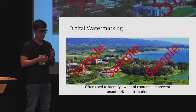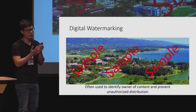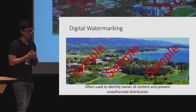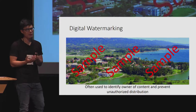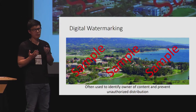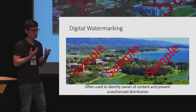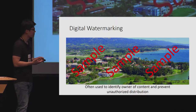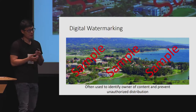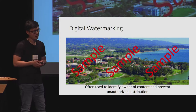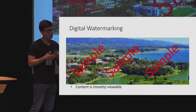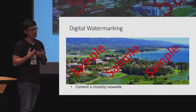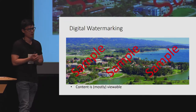So if you look at this photo and really like it, you can pay the photographer and they can provide you with the original image that is not watermarked. For these types of scenarios, a watermarking scheme is useful only if it satisfies the following two properties.